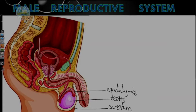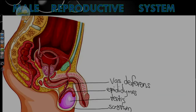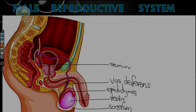The epididymis is the structure that stores the mature sperm before they are released. When they are released, they go into a tube called the vas deferens. Sperm leave the epididymis, travel through this tube, and enter or pass through a structure at the back called the seminal vesicle.